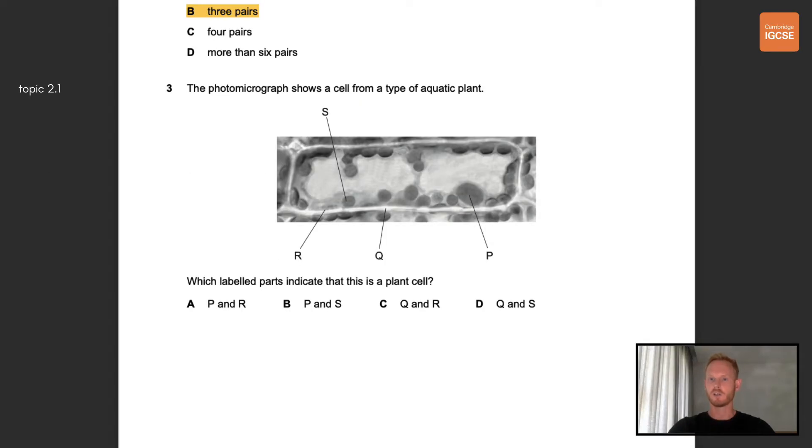Number three, the photomicrograph shows a cell from a type of aquatic plant, which labelled parts indicate that this is a plant cell. P is the nucleus, Q is the cell wall, R is the cell membrane and S looks to be a chloroplast. Animal cells have a cell membrane and a nucleus, so the parts that indicate that this is a plant cell are the cell wall and chloroplast, labelled Q and S.